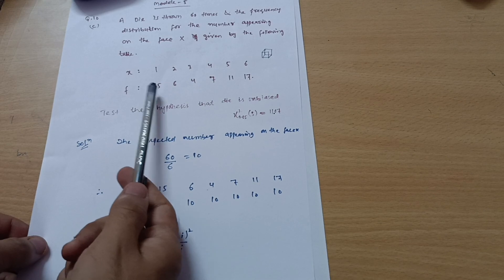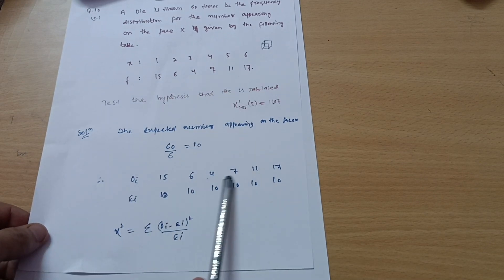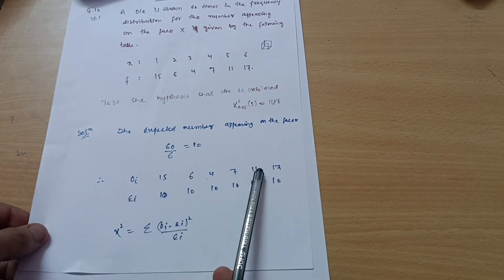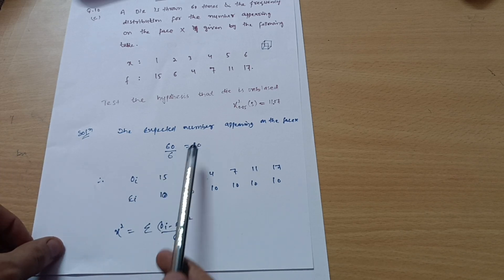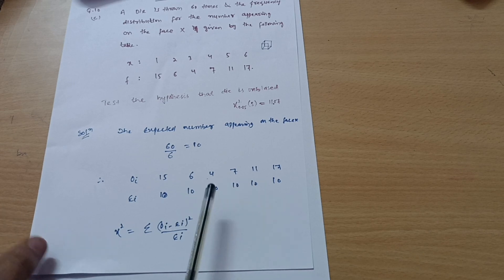Observed value is 15, 6, 4, 7, 11, 17. Write down over here: 15, 6, 4, 7, 11, 17. It is denoted by Oi. Expected value is denoted by Ei, so it is 10 for each: 10, 10, 10, 10, 10, and 10.